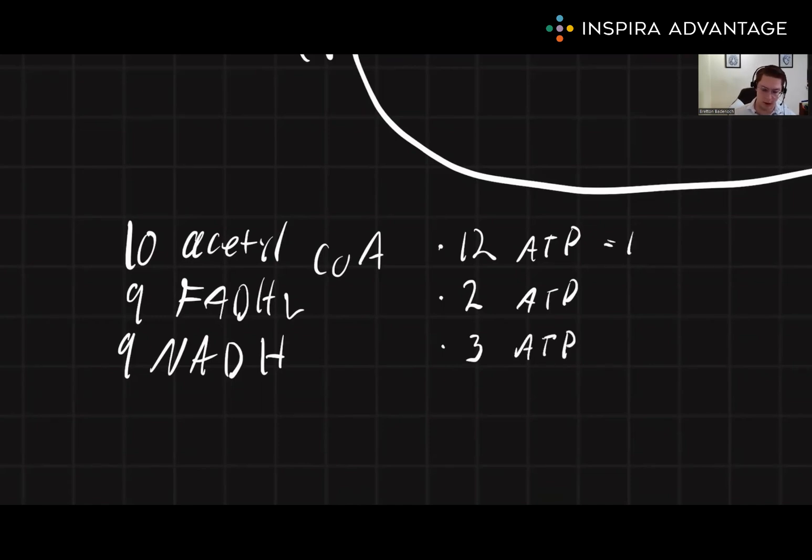Multiplying these out, we get 120 ATP from the acetyl CoA. We get 9 times 2, 18 ATP from the FADH2, and we get 3 times 9, 27 ATP from NADH. If we sum these together, we get a net total of 165 ATP.